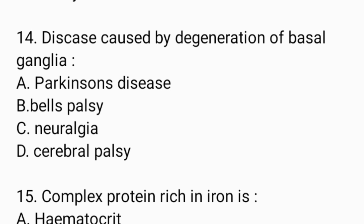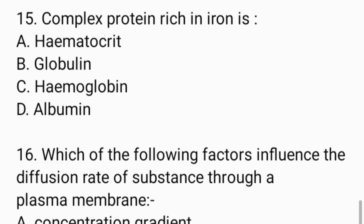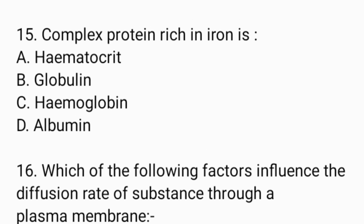Next question: Complex protein rich in iron is — Option A: hematocrit. Option B: globulin. Option C: hemoglobin. Option D: albumin. And the answer is Option C, hemoglobin.